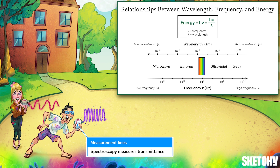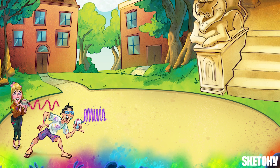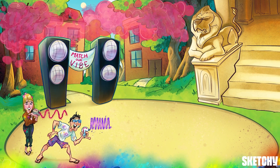Those measurement lines on both of their containers are to let you know that spectroscopy works by passing light through a compound, then measuring how much of each wavelength of light within a given range is absorbed or transmitted. With that information you can determine things about the compound's structure, like which functional groups are present. So let's get into it — we'll start with IR spectroscopy.